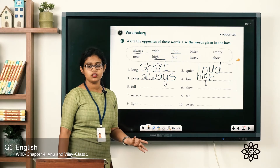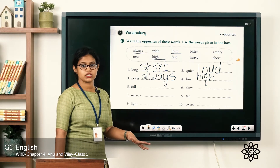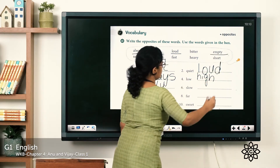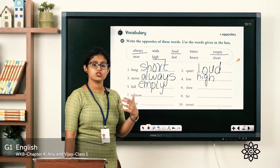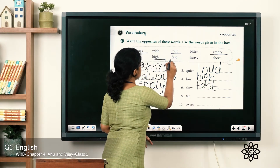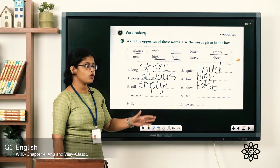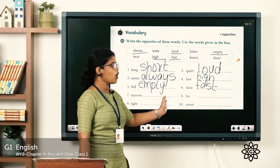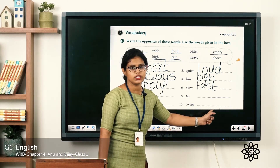Next one: 'Full.' The bucket is full of water — that means it is filled with water. What is the opposite word for full? Empty — empty means nothing. Let's write here empty: E-M-P-T-Y. Then next one: 'Slow.' What is the opposite word for slow? 'She walks slow' — the opposite is fast. 'She runs fast.' F-A-S-T. Likewise you have four more words — you have to find the opposite words for narrow, far, light, and sweet. The answers are in the box; find them and write in the space given.